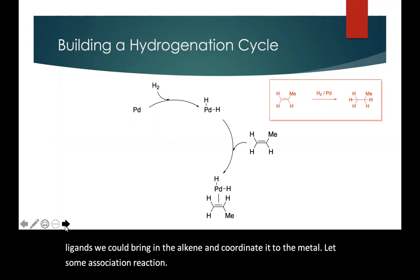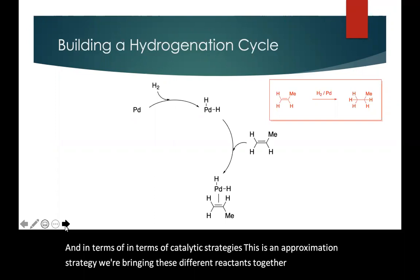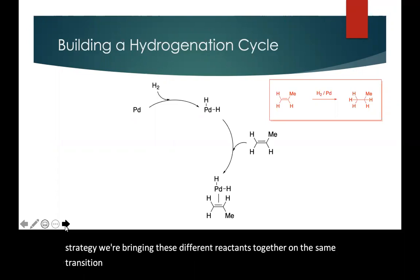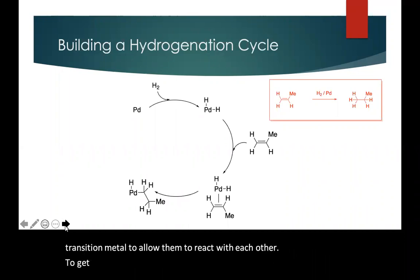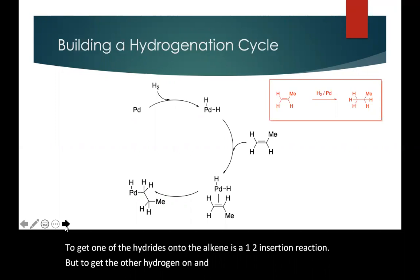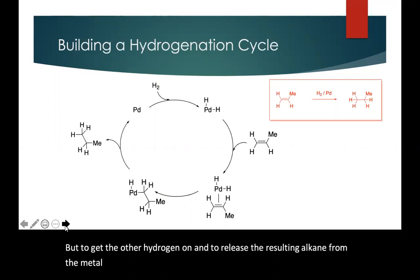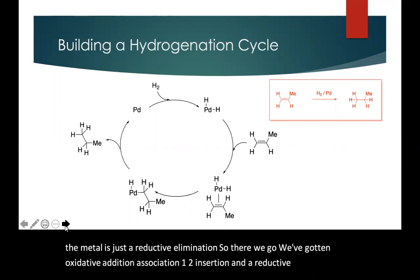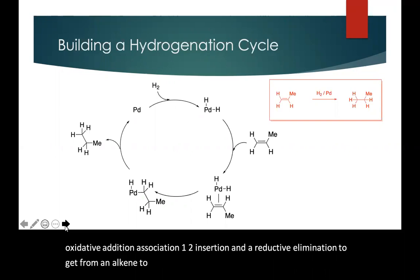And in terms of catalytic strategies, this is an approximation strategy. We're bringing these different reactants together on the same transition metal to allow them to react with each other. To get one of the hydrides onto the alkene is a 1,2 insertion reaction. But to get the other hydrogen on and to release the resulting alkane from the metal is just a reductive elimination. So there we go. We've got an oxidative addition, an association, a 1,2 insertion, and a reductive elimination. To get from alkene to an alkane. That's catalytic hydrogenation.